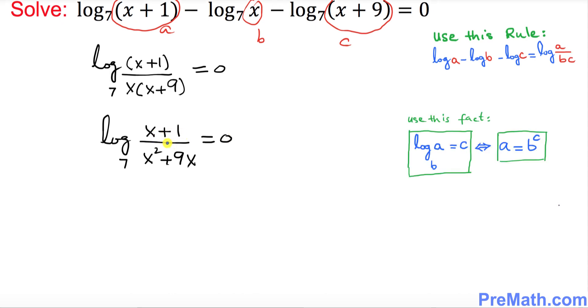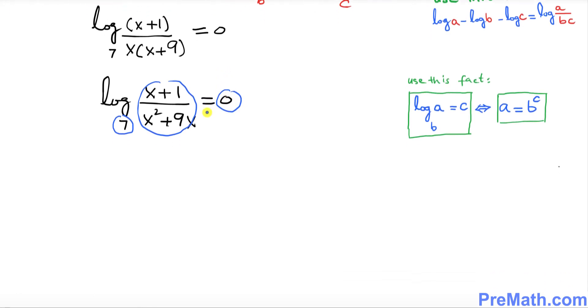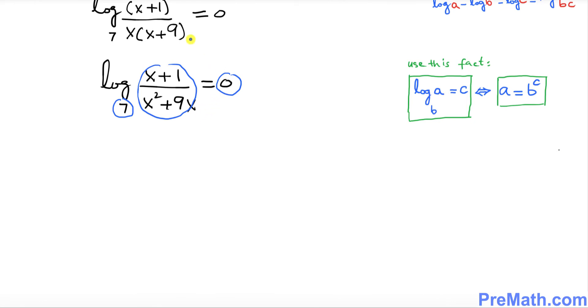Now we want to convert this logarithmic equation to an exponential one by using this fact. If you look at it, if you compare over here, this is our base b, this whole part is our a, and this right hand side is c.